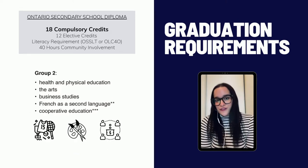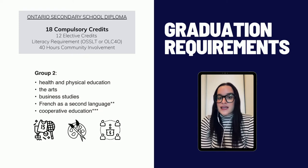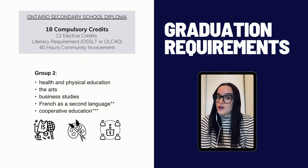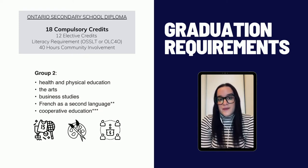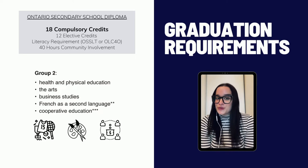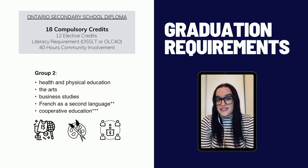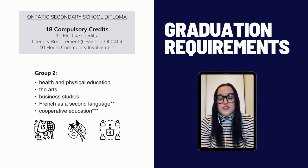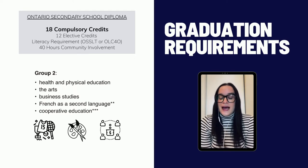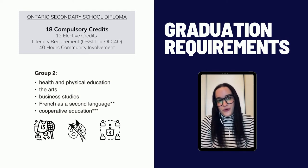The same rules apply for the Group 2 credit — a student must pick up an additional course that falls under specific subheadings. An example of a Group 2 course could be an additional phys ed, business studies, an additional art course in music, drama, or visual arts, or carrying on with the French program.